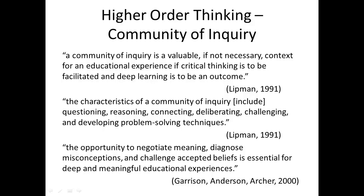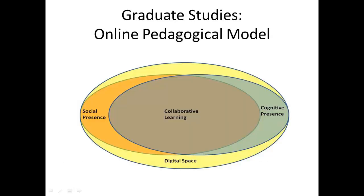Consistent with this, Ramsden (1988) argues that the opportunity to negotiate meaning, diagnose misconceptions, and challenge accepted beliefs — as in the community of inquiry described by Lippmann — is essential for deep and meaningful educational experiences. Our model of online pedagogy in the graduate program, the M.Ed and M.A. programs at UOIT, is based on a community of inquiry approach to learning, as outlined by Garrison, Anderson and Archer (2000). The model suggests that deep and meaningful learning within the program occurs at the intersection of two spheres: social presence and cognitive presence, immersed within a digital space. Presence is simply understood to be the availability for interaction. Digital space is defined as providing systems, structures, and processes that facilitate ubiquitous learning.